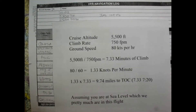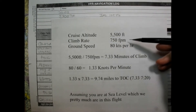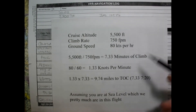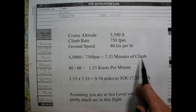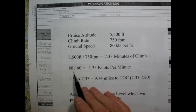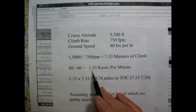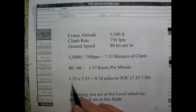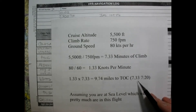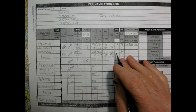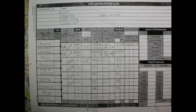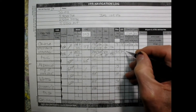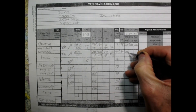Now that we've determined a climb rate, we can do some simple math to figure distance. We take our cruise altitude of 5,500 feet and divide by the climb rate of 750 feet per minute, giving us 7.33 minutes of climb. Then take 80 knots divided by 60 to get 1.33 knots per minute. Multiply 1.33 by 7.33 minutes and we get 9.74 miles to the top of climb. The 7.33 minutes equates to 7 minutes and 20 seconds. We'll round the distance to 9.75 miles.